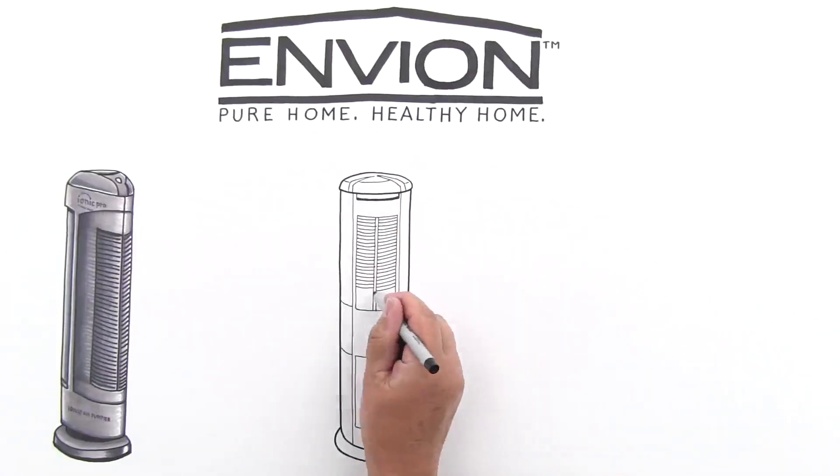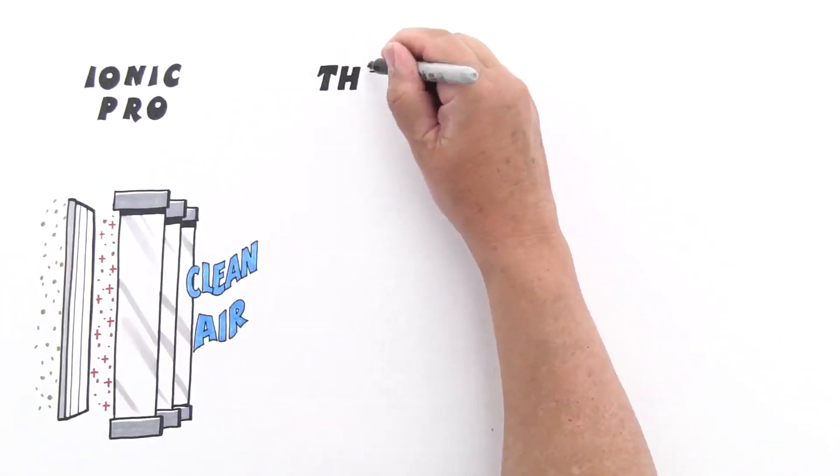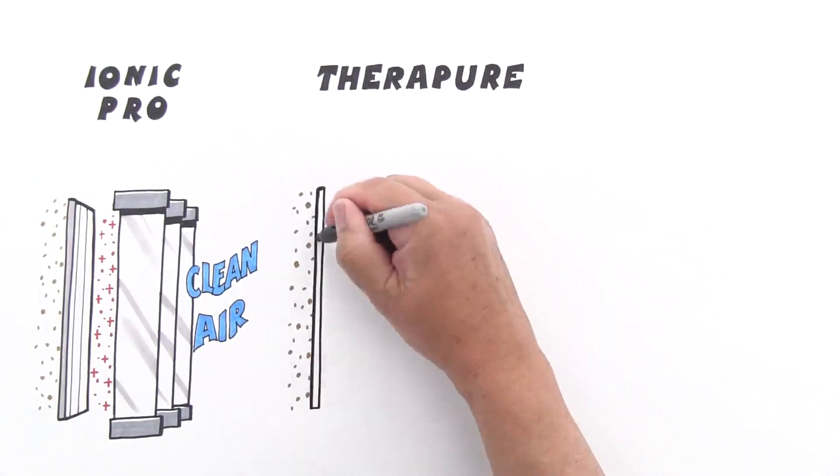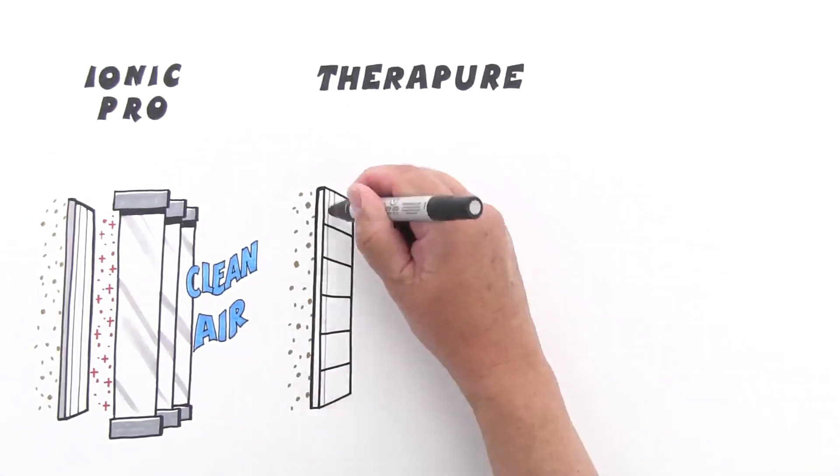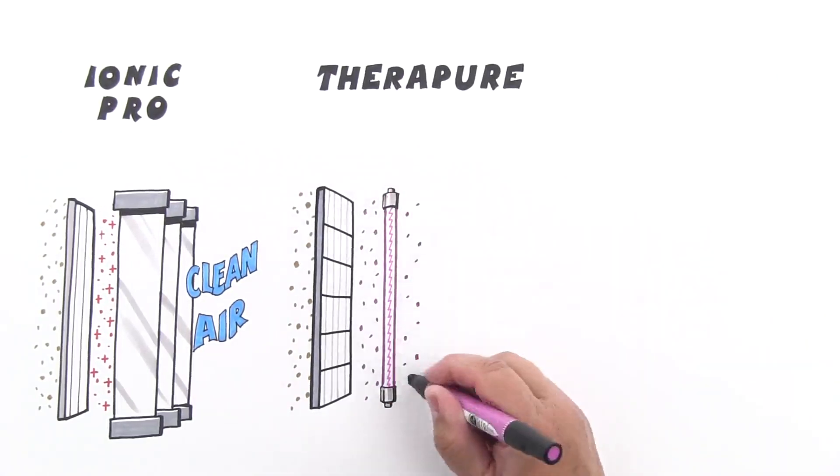What about you germaphobes? Envion has TheraPure. Here's how it works. The air enters the permanent Hepatite filter that removes 99 percent of pollen, dust, smoke, and other particles down to 0.3 microns. Then it passes the powerful UV light which kills viruses and bacteria.